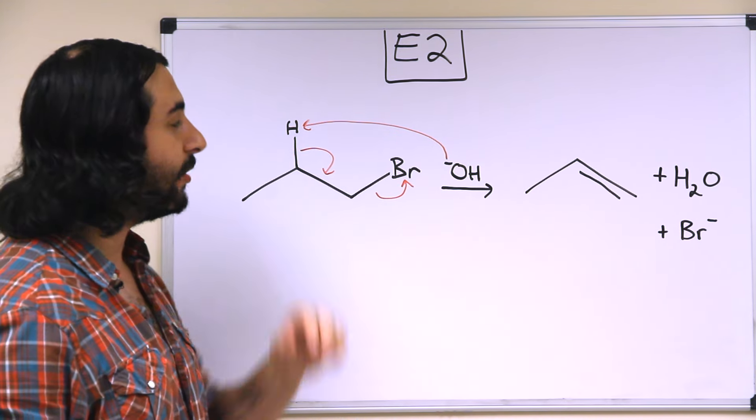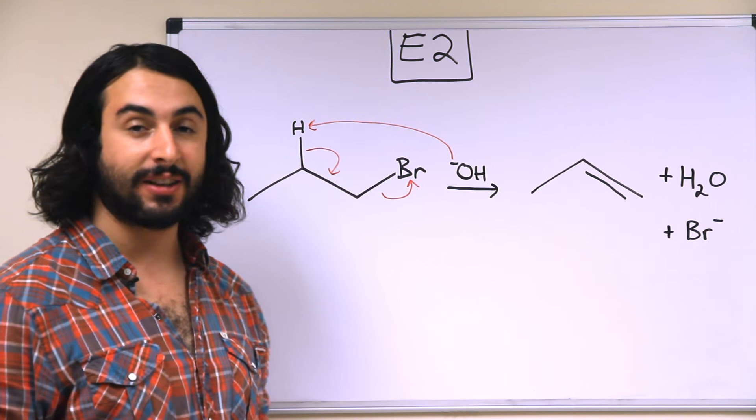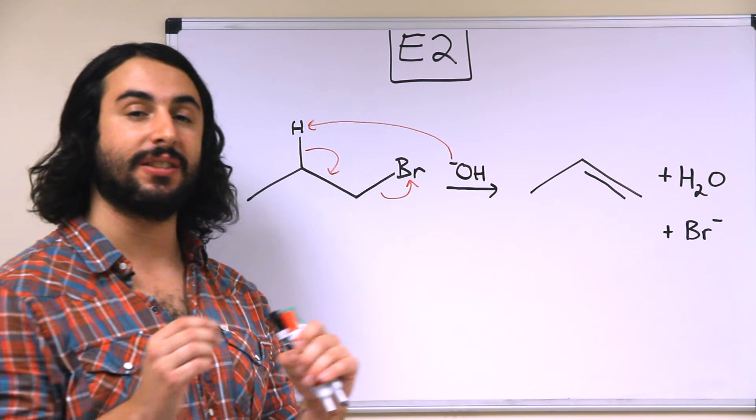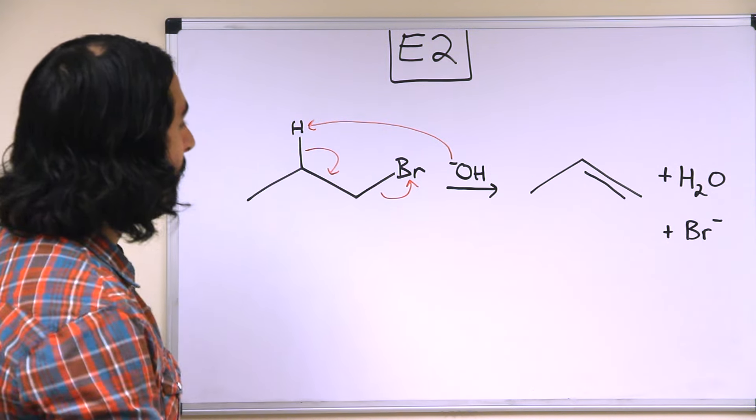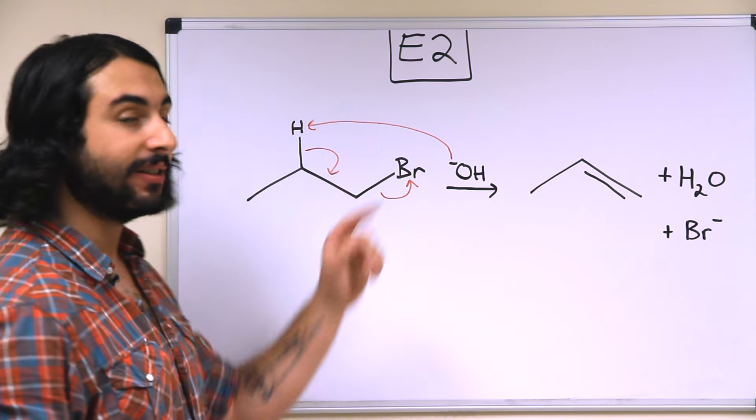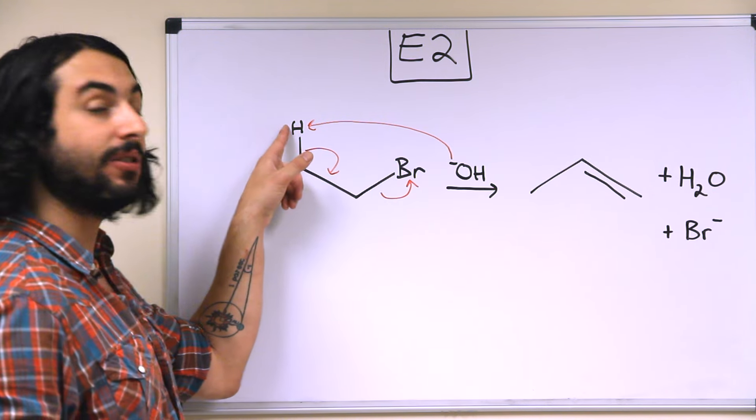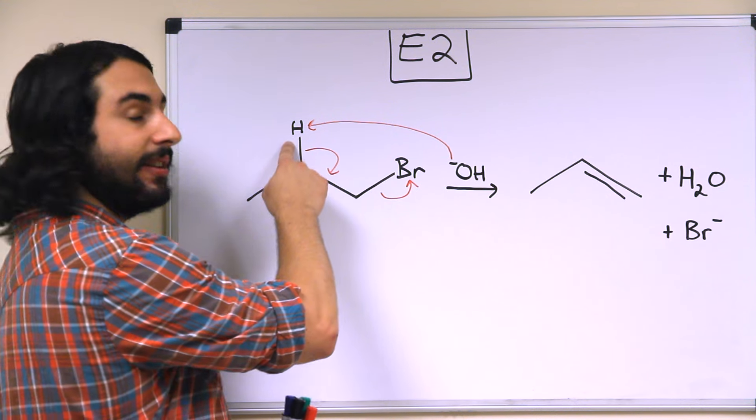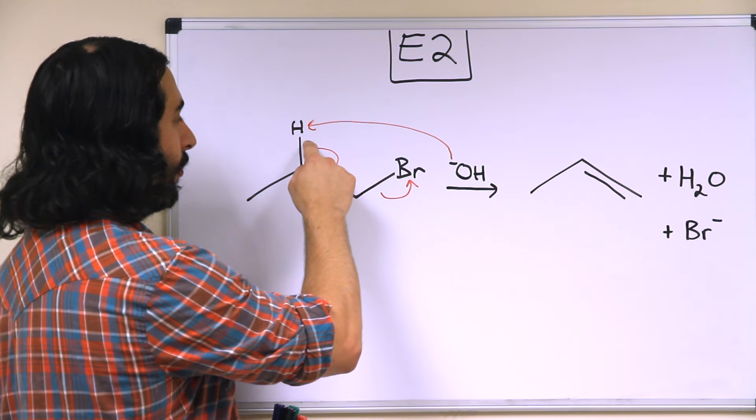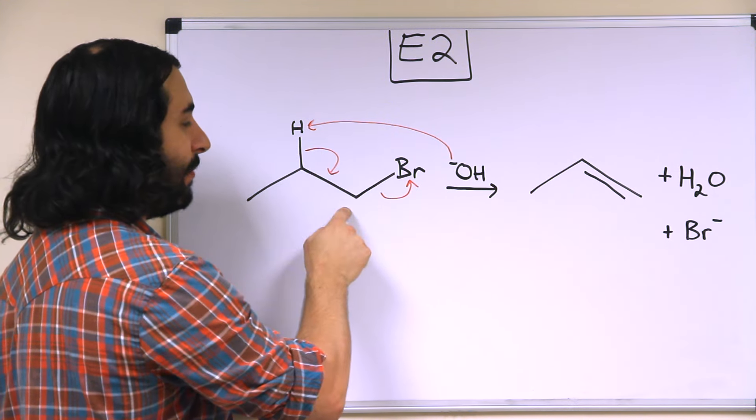So what's going on is some nucleophile, let's say hydroxide. In this case, instead of doing a substitution reaction, we're going to do an acid-base reaction. That means that a proton will be extracted. So notice that the arrow goes from the hydroxide directly to this proton.